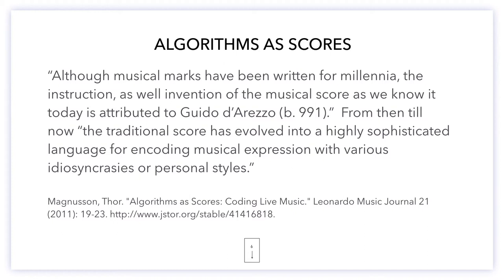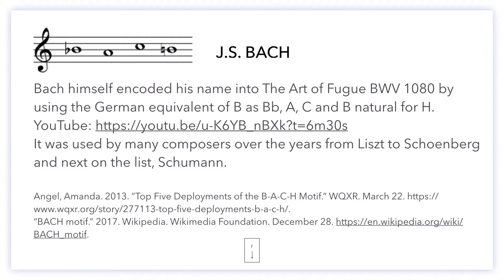Bach himself encoded his name into a piece called The Art of Fugue, BWV 1080, by using the German equivalent: B is B-flat, A, C, and B-natural for H. I recommend you watch it on YouTube with the provided link.